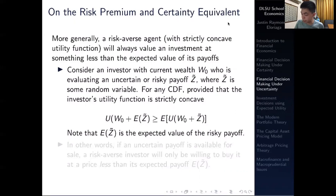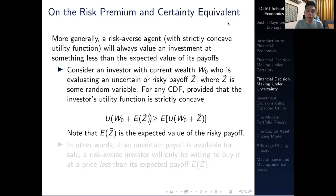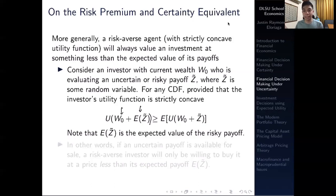Consider an investor with a current wealth W naught. The investor is endowed with some wealth W naught and is considering participating in some gamble with a risky payoff Z-tilde, the result of which is random. For any cumulative distribution function, provided that the investor's utility function is strictly concave, we proved in the past few videos that the utility of sure wealth plus the expected value of the gamble is greater than the expected utility of participating in the gamble.